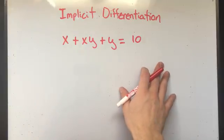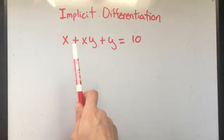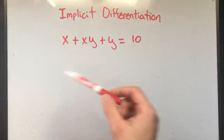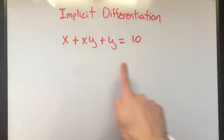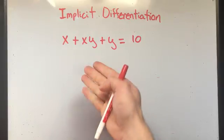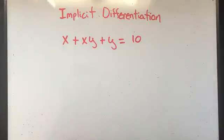We use implicit differentiation when our function doesn't say y equals or f of x equals. You see this function I've written here? I've got x's and y's and it's not written like y equals, but I still want to take the derivative.